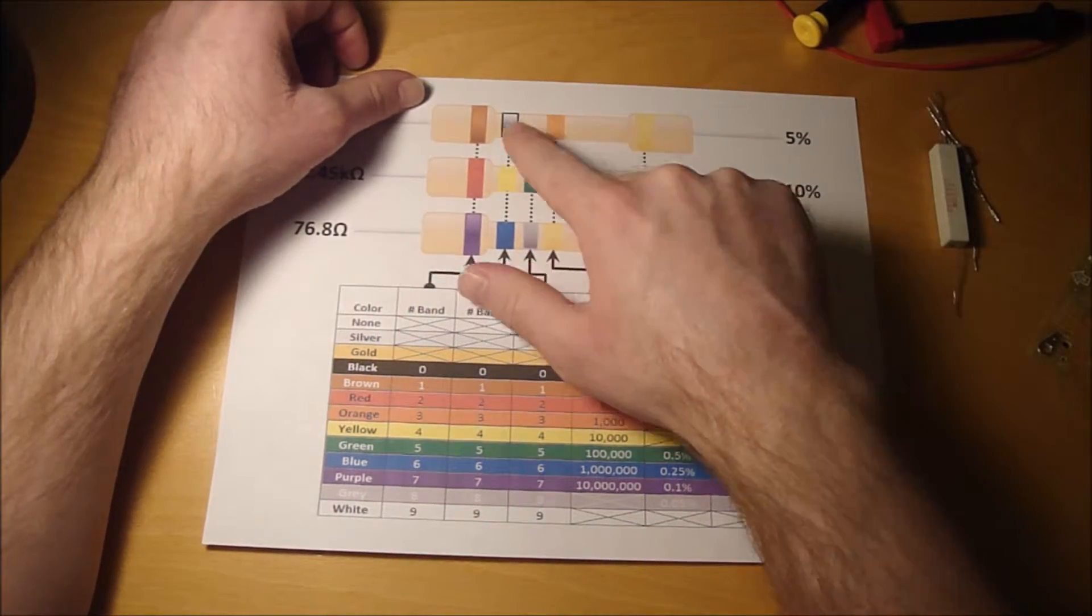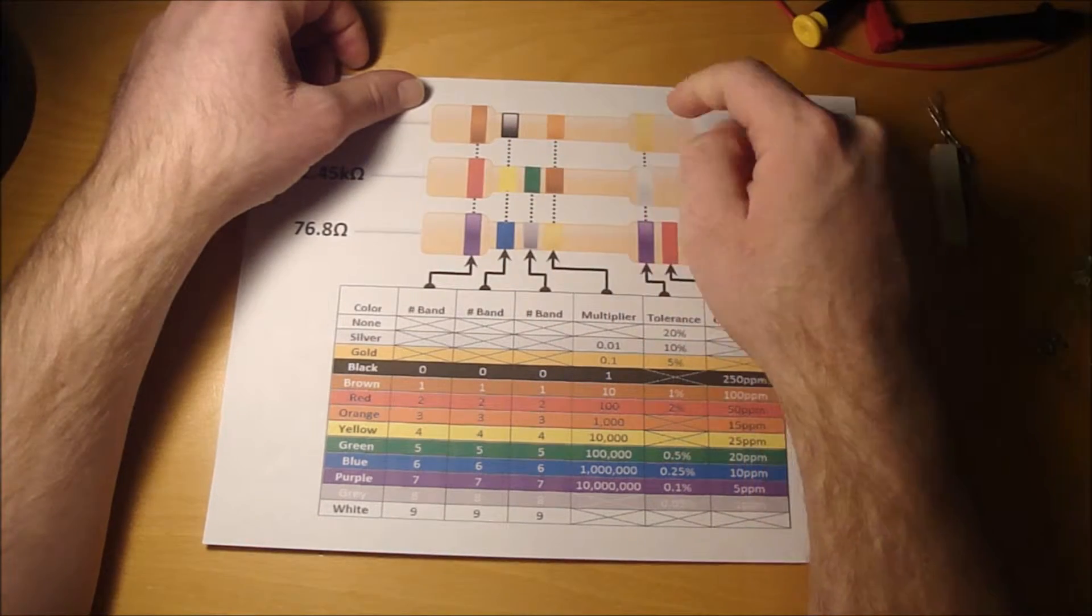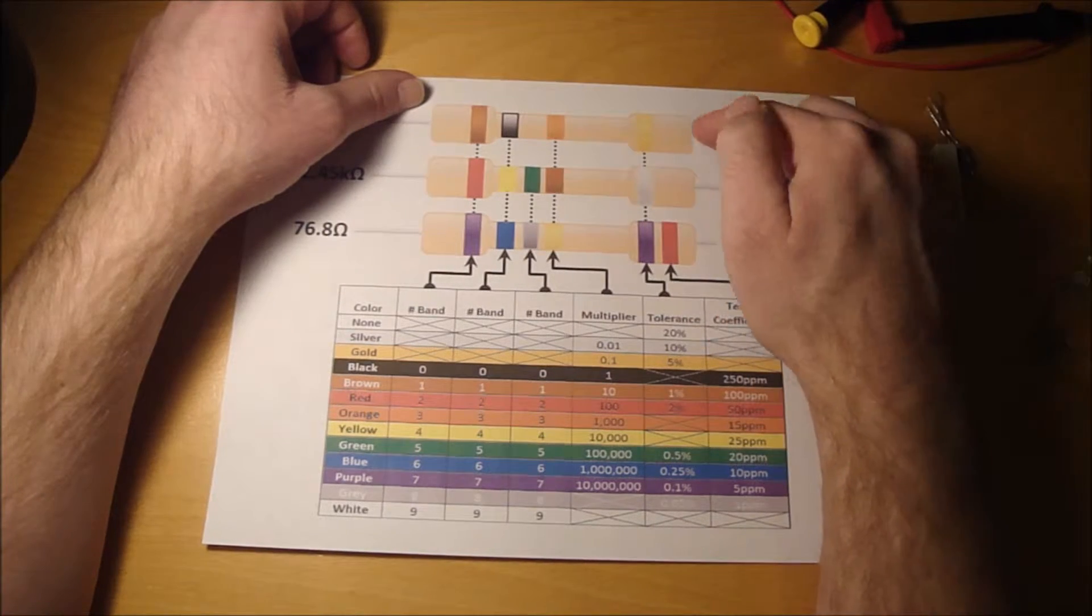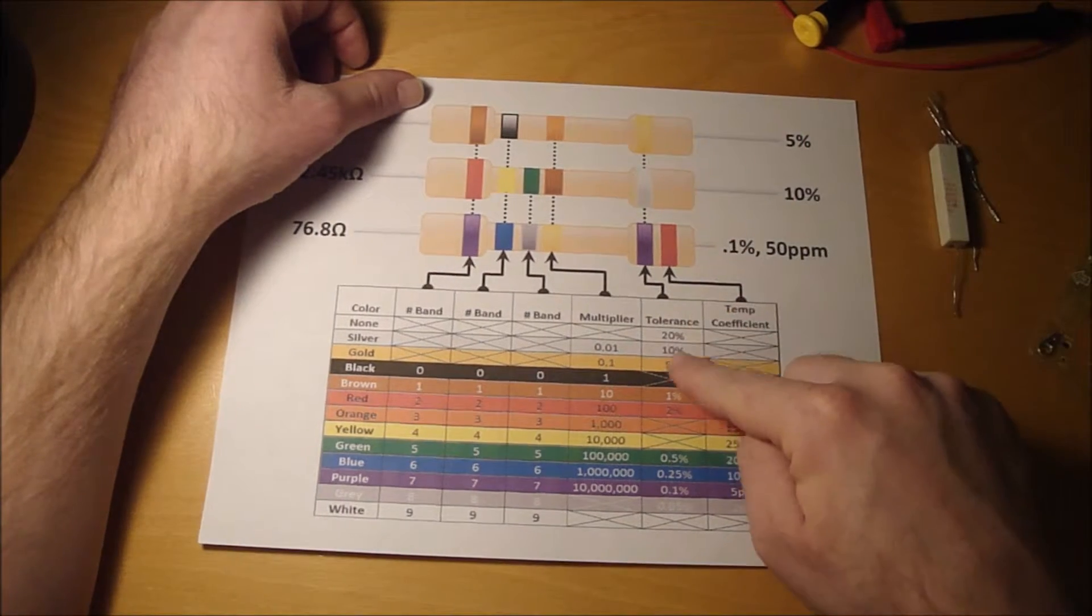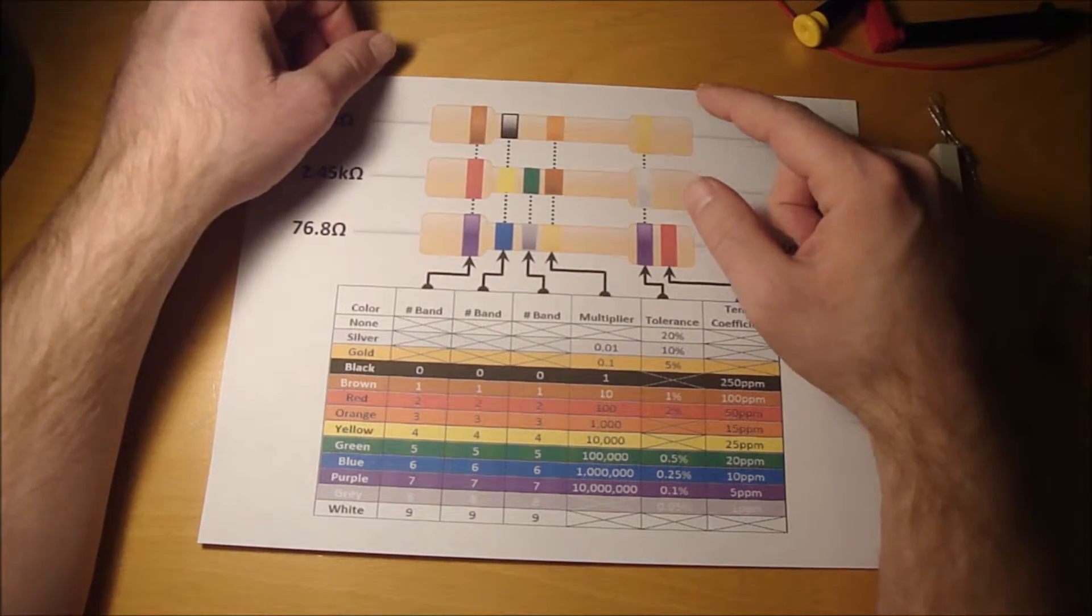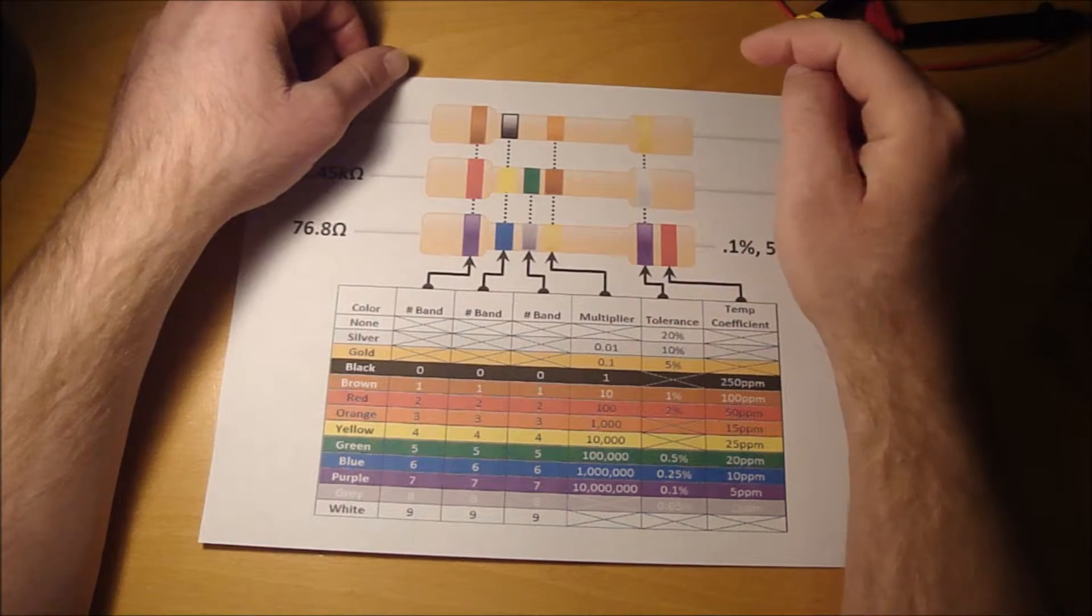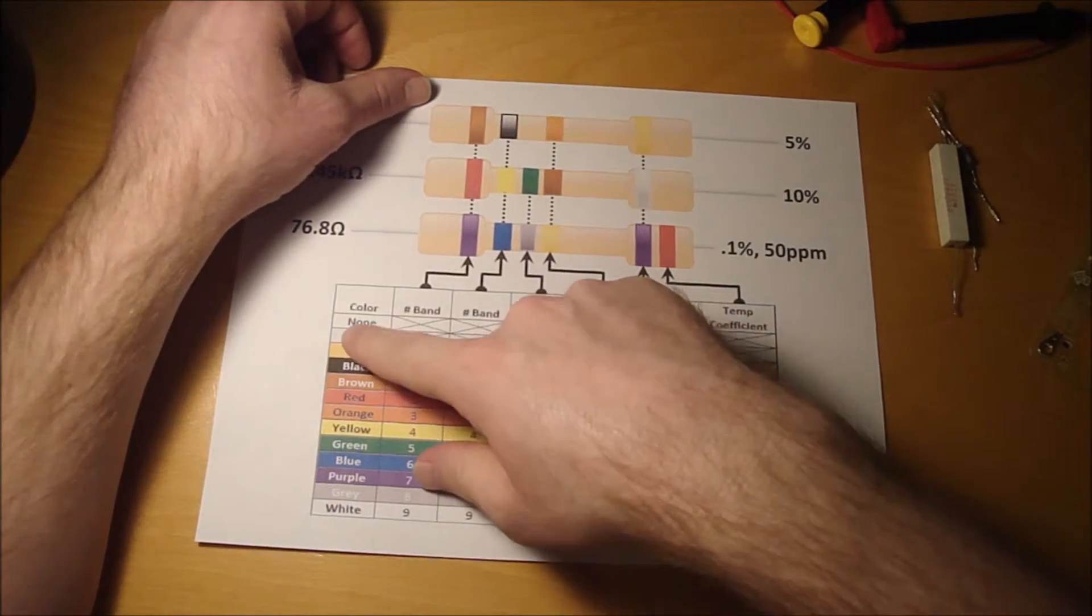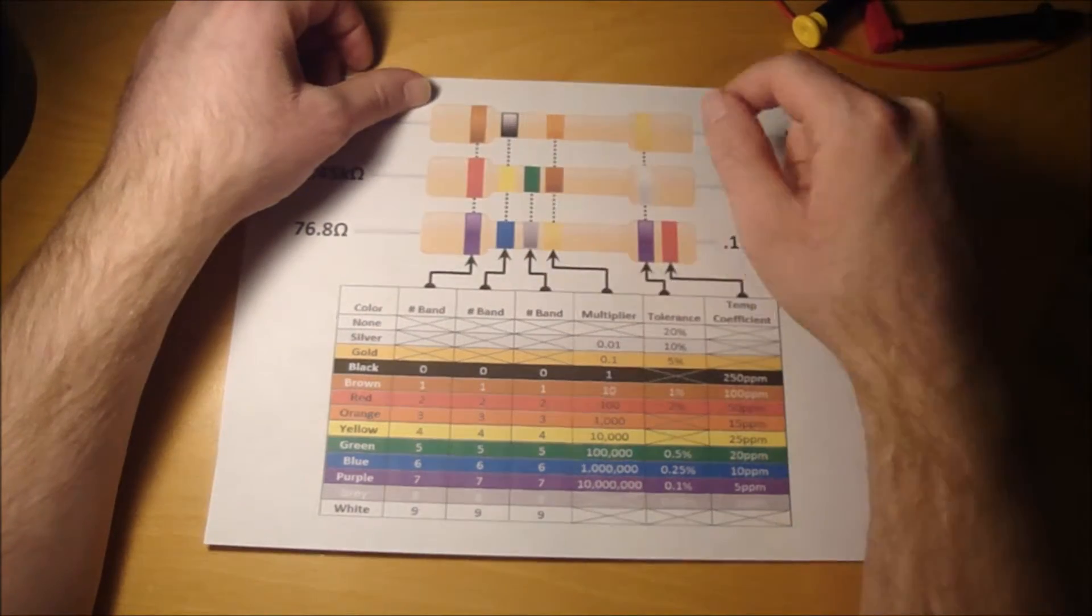After the two number bands and the multiplier, there's a gap. And then after that gap is the tolerance. This is supposed to be gold, and gold is a five percent tolerance. If you have a resistor that just has three bands and no tolerance band, then the default tolerance is 20%.